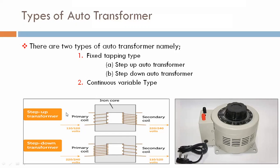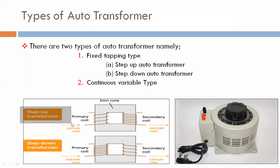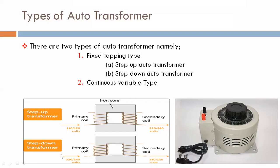For step up transformer, we are giving voltage 110 and 120 volts as input. At the output of the secondary coil, we are getting 220 and 240 volts. That's for step up conventional transformer. In step down conventional transformer, the primary coil is given 220 and 240 volts, and the output we are getting is 110 and 120 volts. If we give 220 volts, we get 110. If we give 240 volts, we get 120. That's called a conventional transformer.